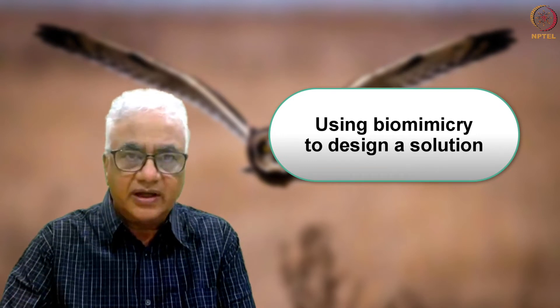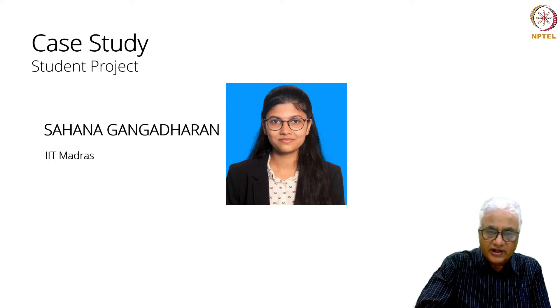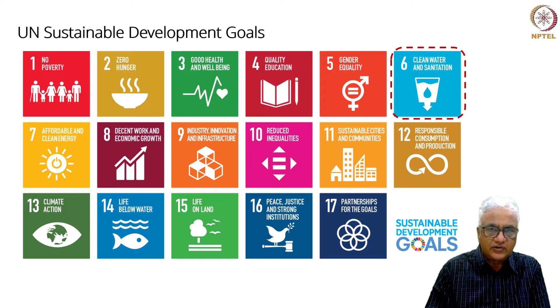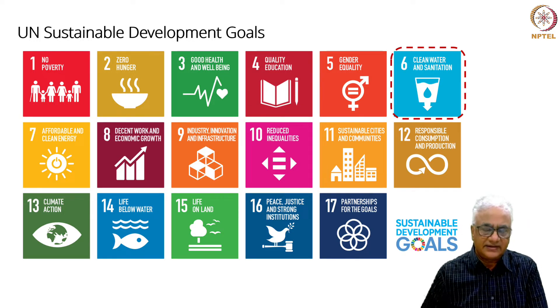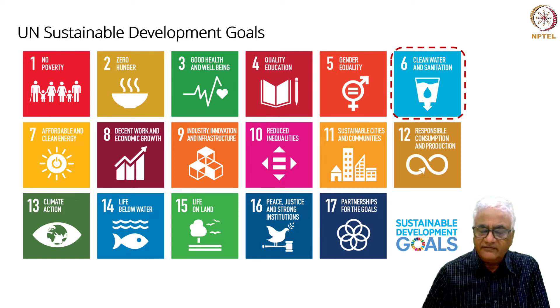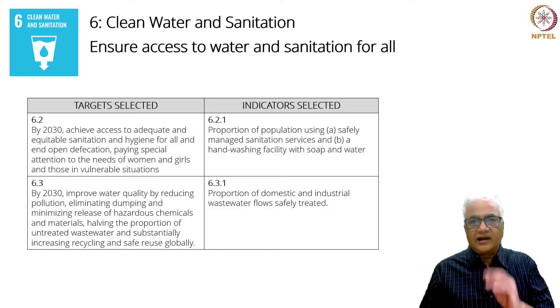So now I'm going to go to the student project. The name of the student is Sahana Gangadran from IIT Madras. What do you think she would have done first? She would have chosen her United Nations Sustainable Development Goal. The goal she's chosen is goal number six: clean water and sanitation. There's apparently an emotional connect for her to clean water and sanitation, which is why she chose it. This is the target selected.